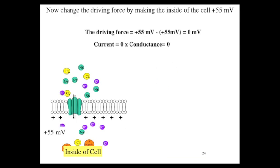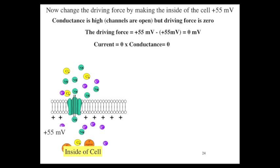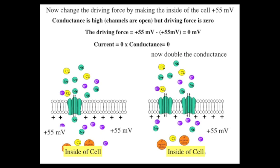If we leave conductance high but make the driving force zero by setting the membrane potential at the sodium equilibrium potential of plus 55 millivolts, the driving force is plus 55 minus plus 55, which equals zero. So the current is zero — one ion in, one ion out through each channel. Even doubling the conductance makes no difference; there will be two in and two out, but no net flow of current. That's what the equilibrium potential means.